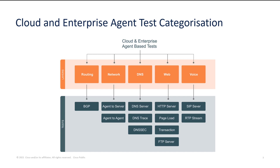BGP testing monitors public prefix availability on the internet around the world, reporting changes and metrics about path changes, reachability, and BGP updates. Private peering is also a possibility — ThousandEyes can peer with organizations to provide visibility and metrics related to private BGP routes, giving you both public and private peering metrics.